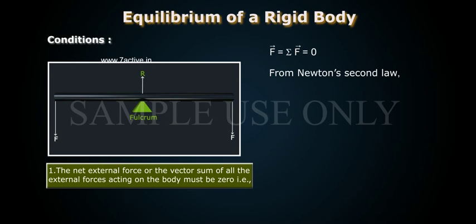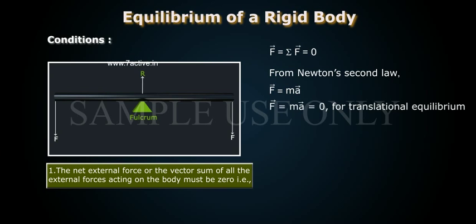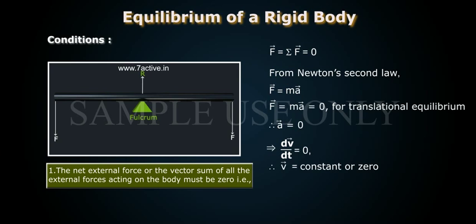From Newton's Second Law, F̄ = mā. So F̄ = mā = 0. For translational equilibrium, therefore, ā = 0. That implies dv̄/dt = 0, and therefore v̄ = constant or zero.